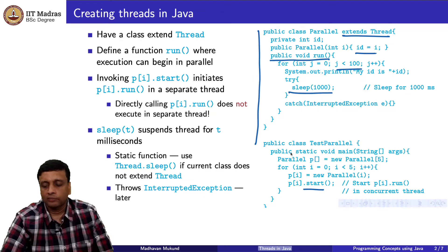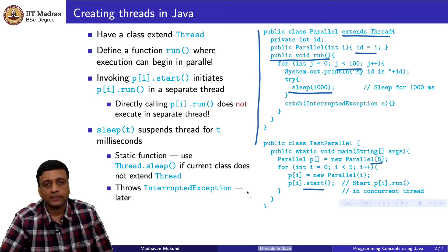Now this class at the bottom, this main function, it creates 5 such objects. It has an array of 5 such things. It creates in p[i], it creates a new Parallel object whose id is i and then it starts it. The important thing is that it is start and not run.